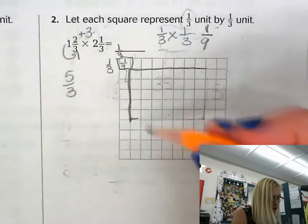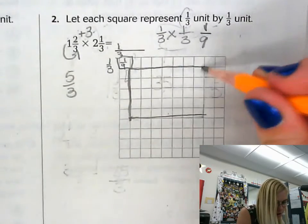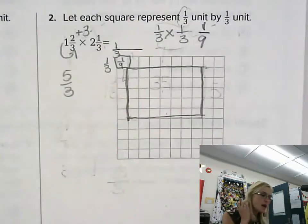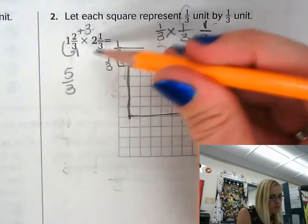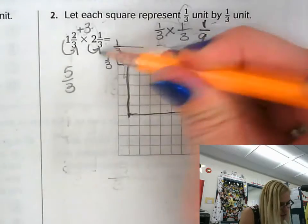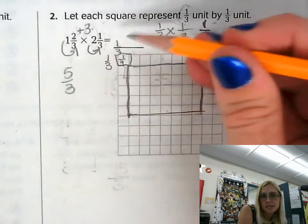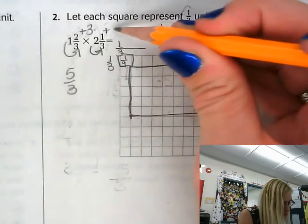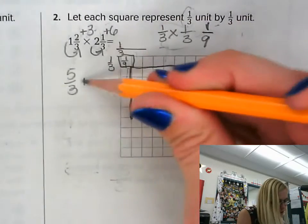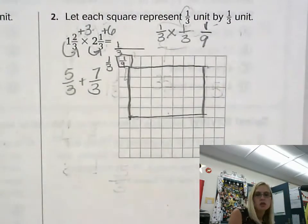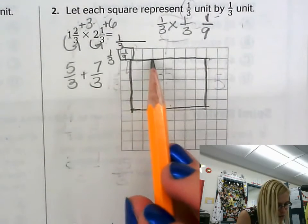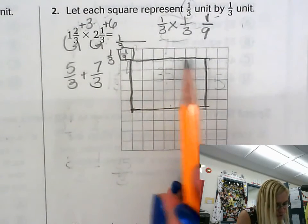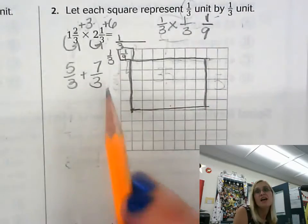So now I can go ahead and finish out my rectangular area model. And again, you can check this using an improper fraction. Multiply your whole number times your denominator. Two times three is six, and then adding that into your numerator, which becomes seven thirds. And again, you can see that going across, that I went across seven: one, two, three, four, five, six, seven. So I went across seven thirds.